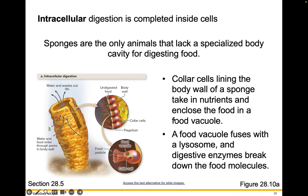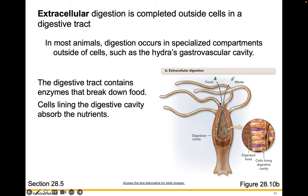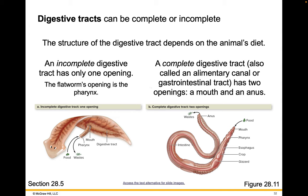I tell you about sponges and hydra to give you an idea of how digestion happens across the animal kingdom, but for our exam, you'll be expected to understand how digestion occurs in humans. Digestive tracts can be complete or incomplete, and the structure depends on the animal's diet. An incomplete digestive tract has only one opening — the flatworm's opening is the pharynx. A complete digestive tract, also called an alimentary canal or gastrointestinal tract, has two openings — a mouth and an anus — so everything moves in one direction.